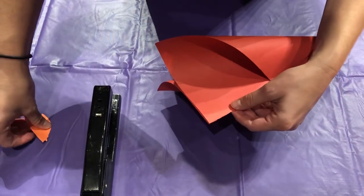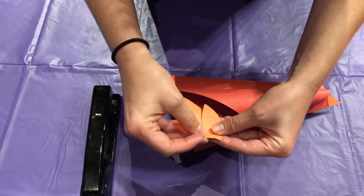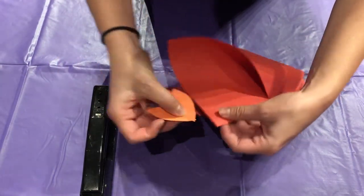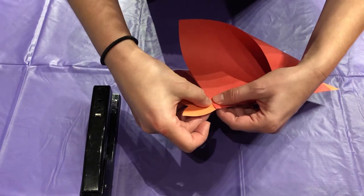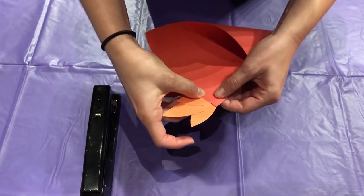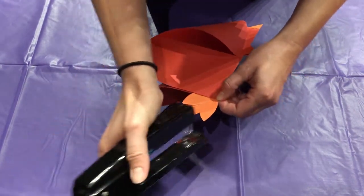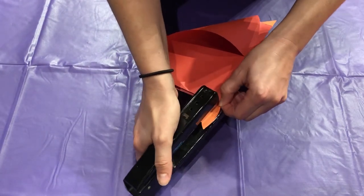And then take your tail feathers that you've already cut out and place them there. You don't really want to use glue because you don't want to make it too heavy. That's why we're using the stapler.